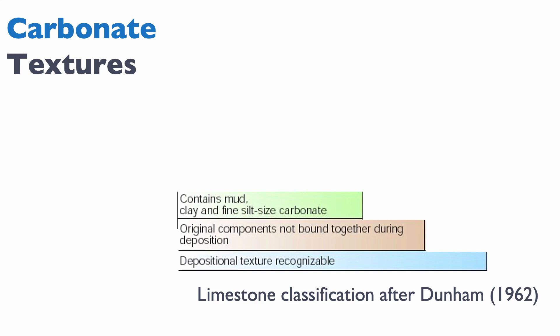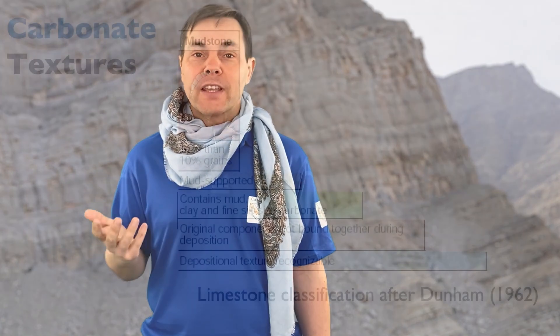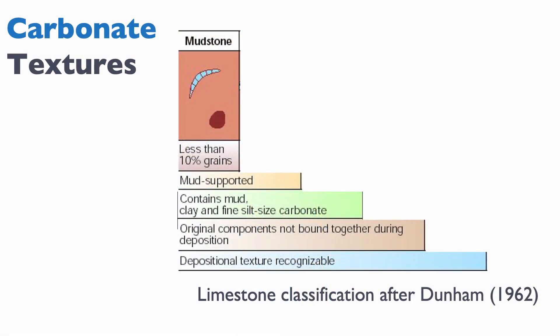So the next question is whether or not the sediments contain mud — mycrite. If they have either clay or fine silt carbonate, that leads us to our next question: is the rock mud supported? Mud supported means that if you look at the thin section or at your hand specimen, the grains that form the rock are not touching — they're floating in mud. If that's the case and you have less than 10% grain in your matrix, then we call this rock a mudstone.